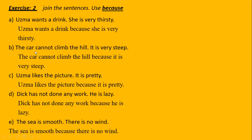I just did it here for your explanation, but you will do it in your notebooks by your own. See the question from the book and do it in your notebooks. The car cannot climb the hill. It is very steep. The car cannot climb the hill because it is very steep. Remove the full stop after 'hill' — no full stop here. We added 'because' between them, then 'it' should be small. Every time when you are joining two sentences, always remember the first letter of the second sentence should be small.